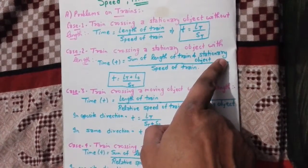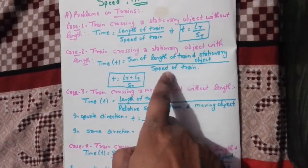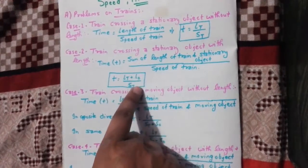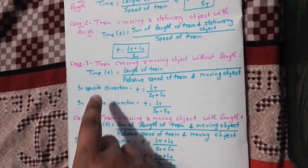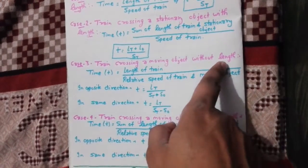Second case: train crossing a stationary object with length. Sum of length of train and stationary object upon speed of train. Lt plus Lo over St.